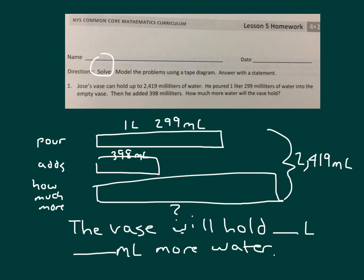What we'll need to do is to figure out how much water that he has added in to begin with. We could convert and rename 1 liter, 299 milliliters, to 1,299 milliliters. And in which case, we would do what with the 398? Did you say add? Add, after we get that total amount, we will subtract it from the 2,419 milliliters to get how much more water that vase will hold.